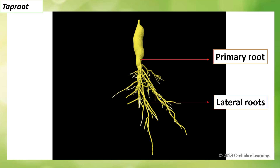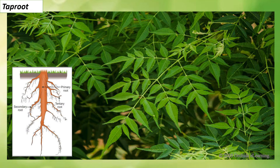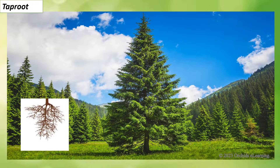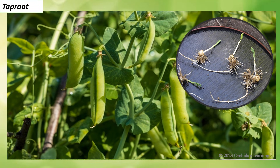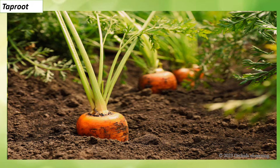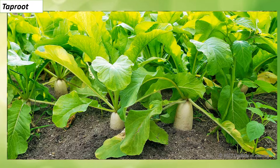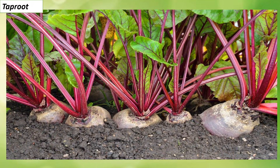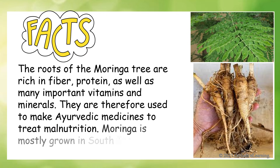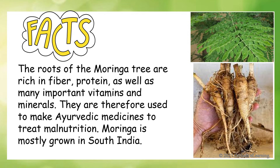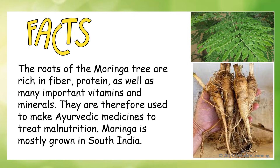Later, smaller roots called lateral roots branch out from the primary root. Mango, pine, shesham, pea, carrot, radish, turnip, and beetroot are examples of plants with tap roots. Fact file: the roots of the moringa tree are rich in fiber, protein, as well as many important vitamins and minerals, and are therefore used to make Ayurvedic medicines to treat malnutrition.